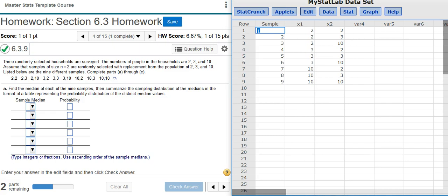Now here we have our data in StatCrunch. To start with, we need to calculate the medians for each of the different samples. So here we have our samples listed in rows, where the first sample we get was 2 and 2, and the second sample we get is 2 and 3.